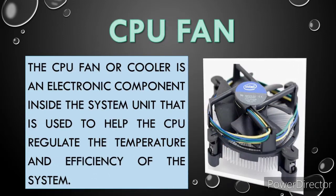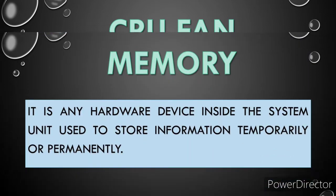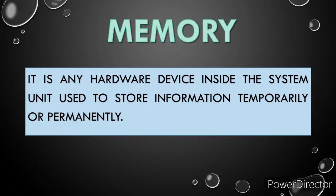The CPU fan or cooler is an electronic component inside the system unit that is used to help the CPU regulate the temperature and efficiency of the system. When we say memory, it is any hardware device inside the system unit used to store information temporarily or permanently. There are two types of memory: the primary and secondary memory.